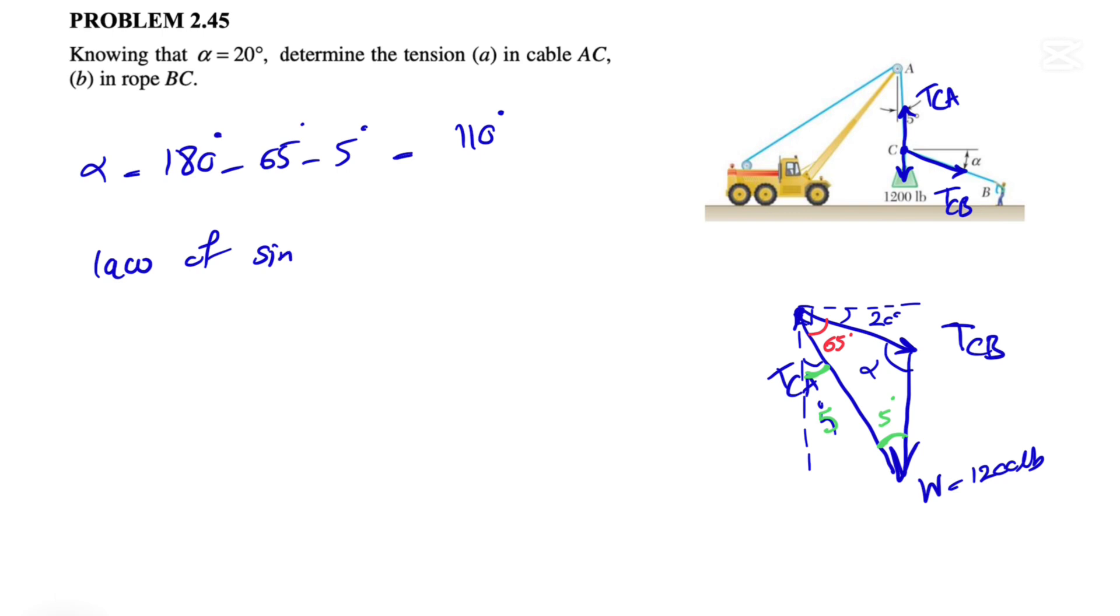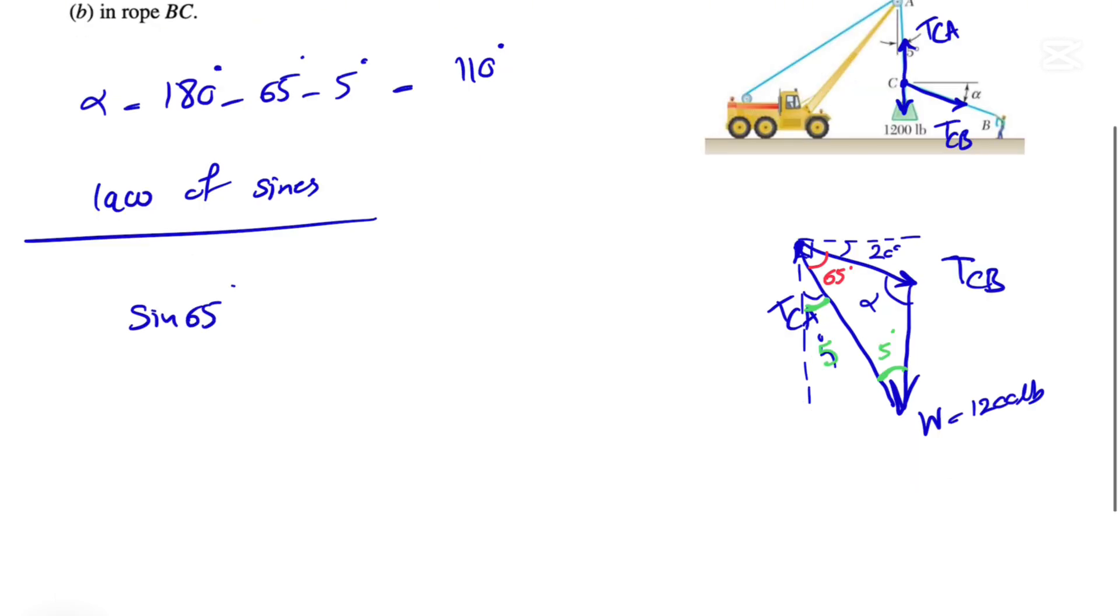Now we're good to go to use our law of sines. So we'll have sine of 65 degrees over the side in front of it, which is our weight. So 1200 pounds equals sine of alpha. We figured alpha is 110 degrees.